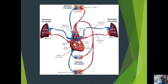The heart is essentially two pumps: a pump for pulmonary circulation on the right side of the heart, and a pump for systemic circulation on the left side. The right side receives blood from the body and sends it through the tricuspid valve into the right ventricle, which then sends blood out to the pulmonary trunk.